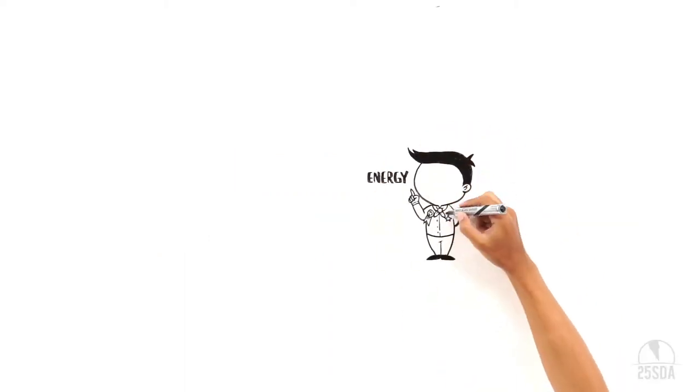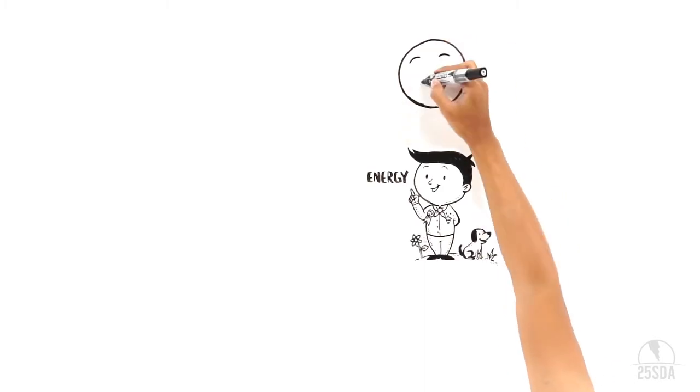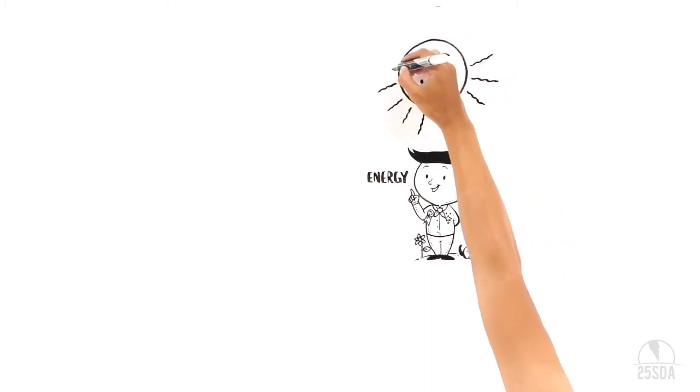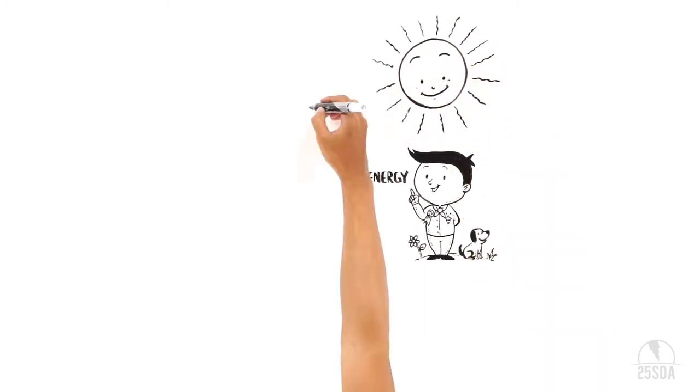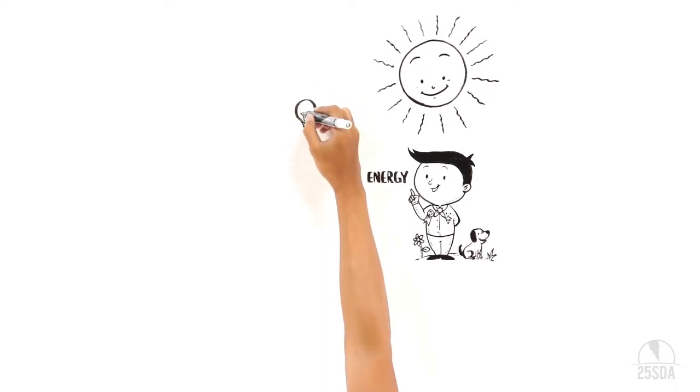Energy. Without it, absolutely nothing would happen. The sun gives us two kinds of energy, light energy and heat energy. At night, electrical energy powers our light bulbs and appliances.